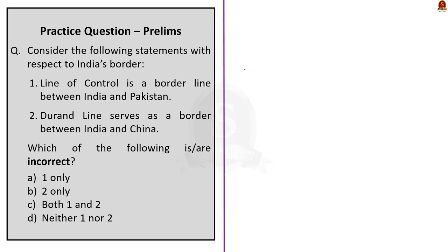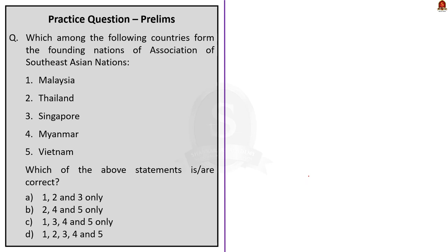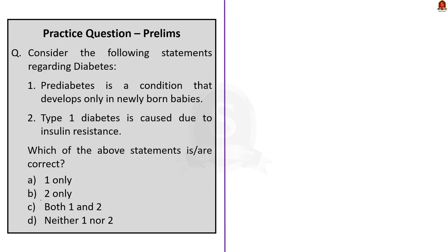Through this discussion, we have learned about the Line of Control, the Line of Actual Control, and the McMahon Line. Now moving to the prelims practice question discussion — five different questions. Question 1: Which among the following countries are the founding nations of ASEAN? The correct answer is option A: Malaysia, Thailand, and Singapore. The founding nations of ASEAN were Indonesia, Malaysia, Philippines, Singapore, and Thailand — note this question asks for founding nations, not current member states.